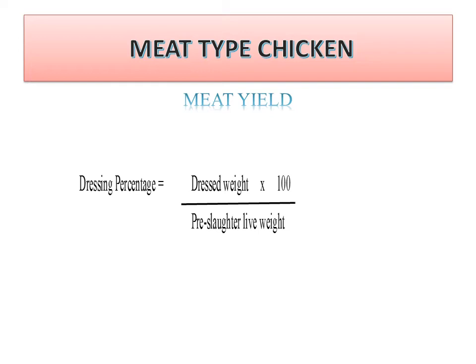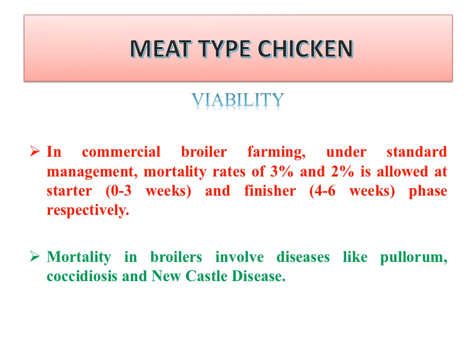Similar to egg-type chickens, viability or longevity is important in broiler farming. Under standard management, a mortality rate of 3% at the starter phase and 2% at the finisher phase is allowable — meaning during the first three weeks mortality must not exceed 3%, and from weeks 4 to 6 it must not exceed 2%. Mortality in broilers involves mainly diseases such as pullorum, coccidiosis, Newcastle disease, and Ranikhet disease.